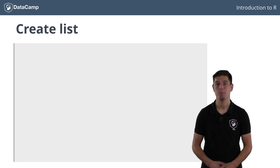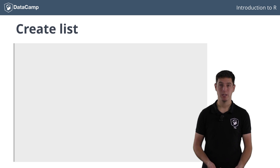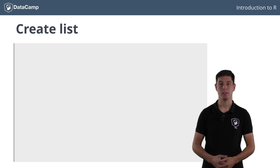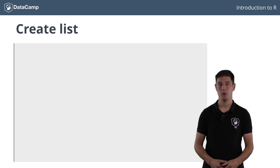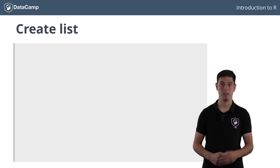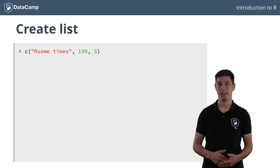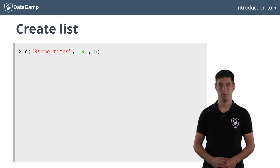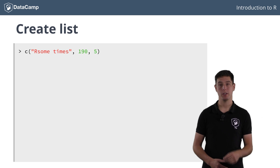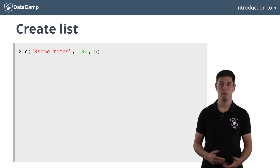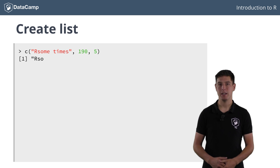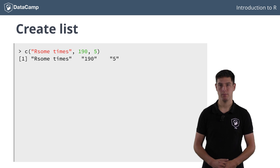Enough for the theory — let's build some lists. Suppose that as a music artist on the rise to fame and fortune, you regularly record some new songs and keep some details for each. Your latest creation is called RSM Times, is 190 seconds long, and should be the fifth number on your record.